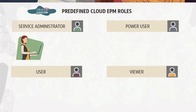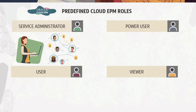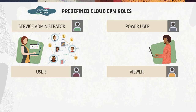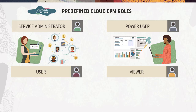Service Administrators perform administrative and functional activities such as managing users and their roles, configuring single sign-on, and setting up network-restricted access. Service Administrators are responsible for configuring application-level security. Power Users can view and interact with data, as well as create and maintain forms, ad hoc grids, and reports.